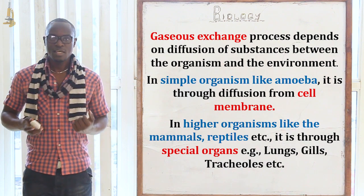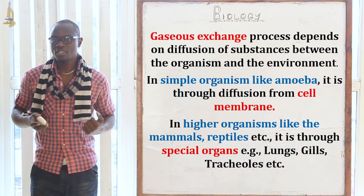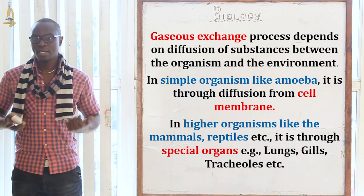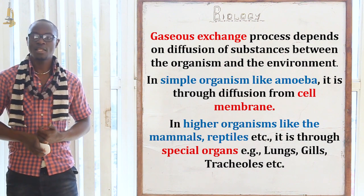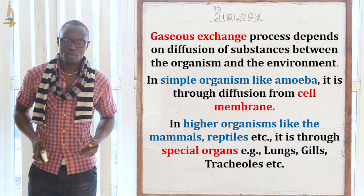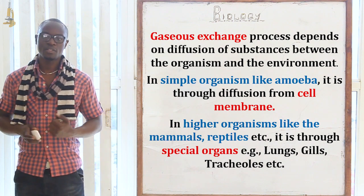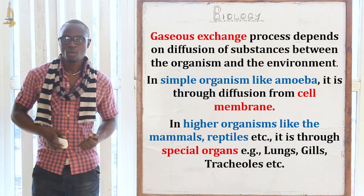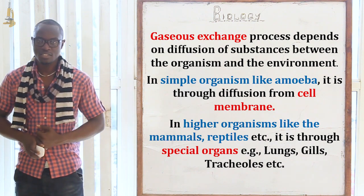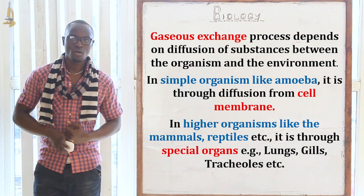The exchange is mainly brought about by the difference in concentration gradient between the living organism and the surrounding medium. In simple organisms, gaseous exchange is mainly through diffusion, while in higher organisms gaseous exchange is mainly through special organs.